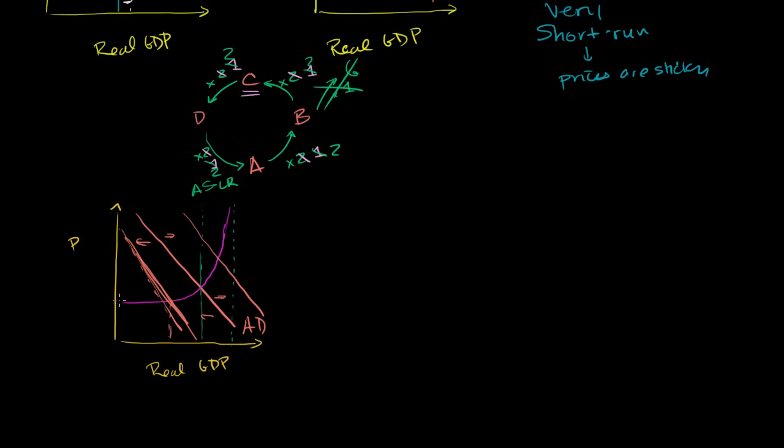So it really depends on the circumstance. But an aggregate supply curve that starts flat at low levels of output and then it gets higher and higher slope and becomes almost vertical near high levels of output, this is probably a better model that takes into consideration both the classical and the Keynesian ideas.